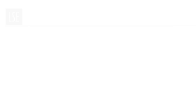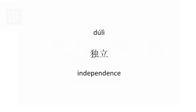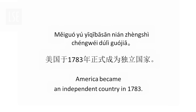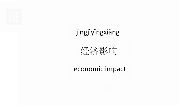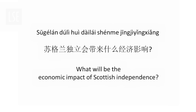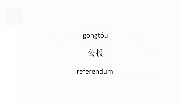Let's take a look at today's key vocabulary. 苏格兰应否独立？ 独立 (independence) — 美国于1783年正式成为独立国家 (The US officially became an independent country in 1783). 经济影响 (economic impact) — 苏格兰独立会带来什么经济影响？(What economic impact will Scottish independence bring?) 公投 (referendum).